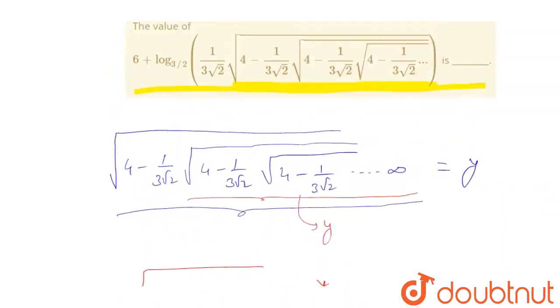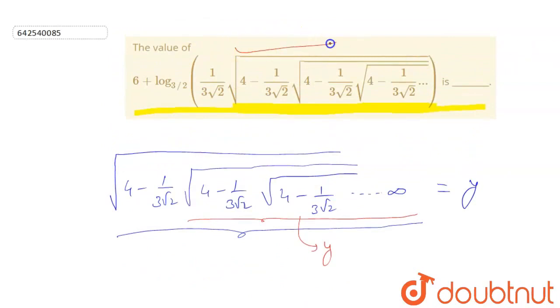This expression from here to here we can write as y. So the question will be 6 plus log base 3 by 2 of 1 by 3 root 2 times y.